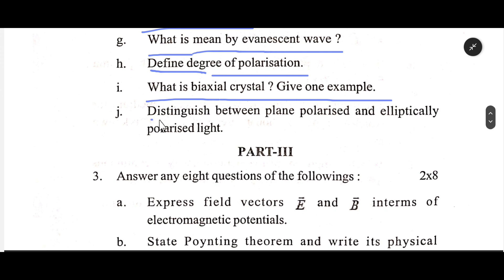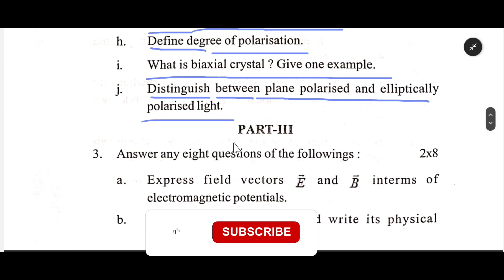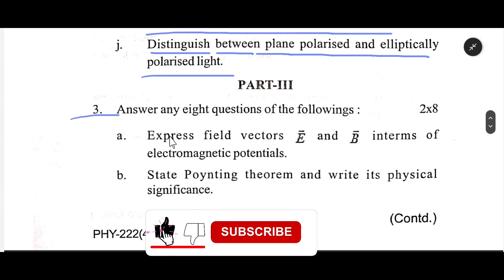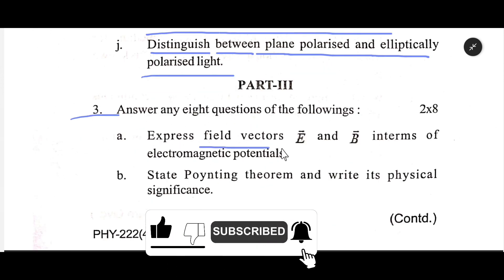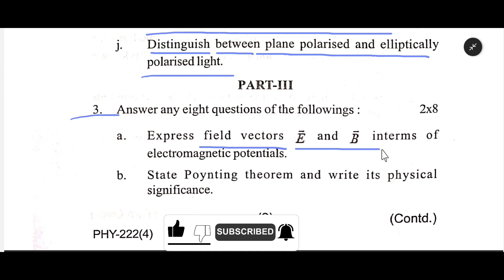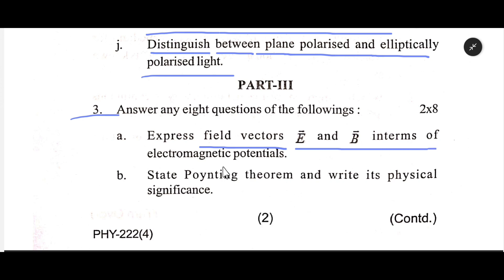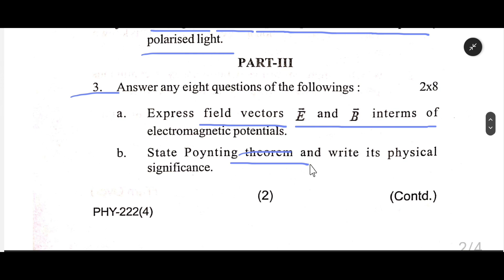Distinguish between plane polarized and elliptically polarized light. Number three: Express field vectors E and B in terms of electromagnetic potentials. State the Poynting theorem and write its physical significance.